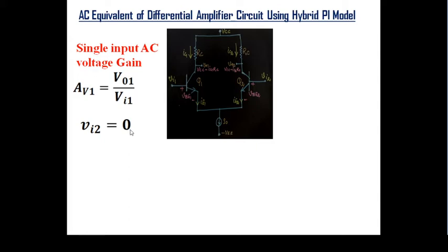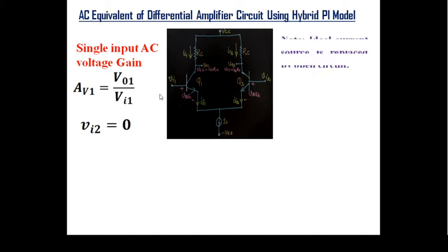For the double-ended differential gain, we give input to both bases. We use the superposition principle: give input to one side, find the output, then ground that input and find the output for the other input, and finally sum the results. For now, for the single-ended case, we find the voltage gain with only one input and the other grounded.